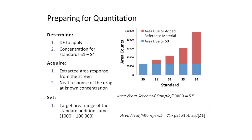We'll then divide that by a target area that we want the S0 sample to be to get the dilution factor. The second piece of information is some knowledge of the relationship between the concentration of the drug and the area response. We can get this by running a neat solution of the drug at a known concentration, then using that relationship to set up concentration for standard one based on a target S1 area.